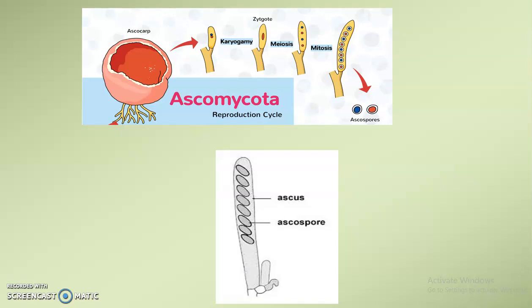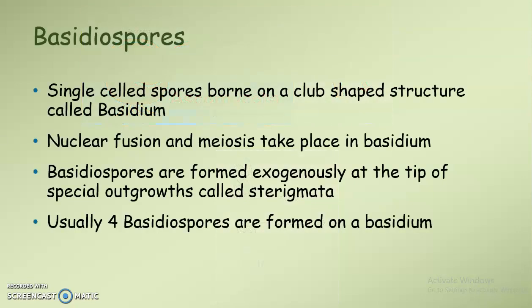Next we can see basidiospores. Basidiospores are single-celled spores borne on a club-shaped structure called basidium. Inside the basidium, nuclear fusion occurs and meiosis occurs — here mitosis is absent. After nuclear fusion we get a diploid zygote, and this undergoes meiosis to form four haploid basidiospores, which are displayed exogenously at the tip of special outgrowths called sterigmata.